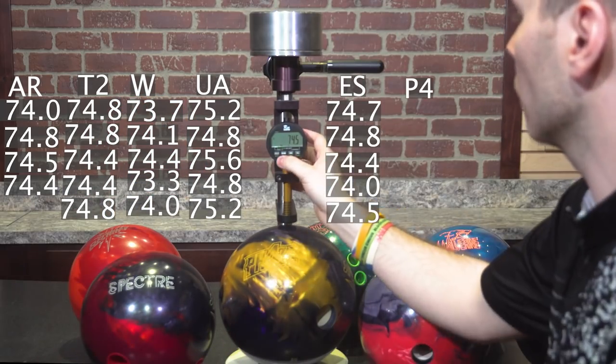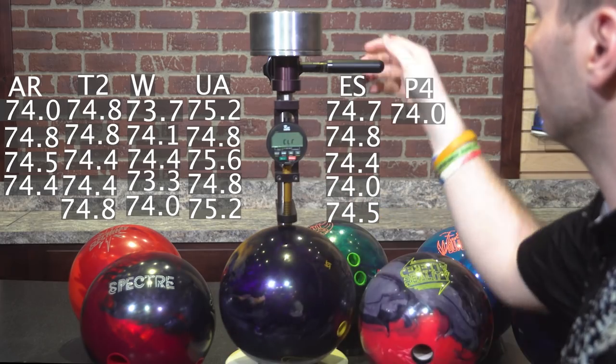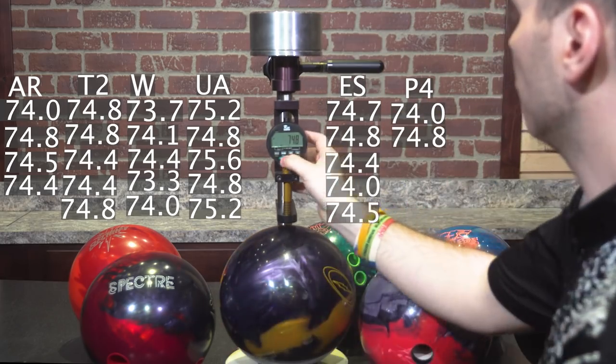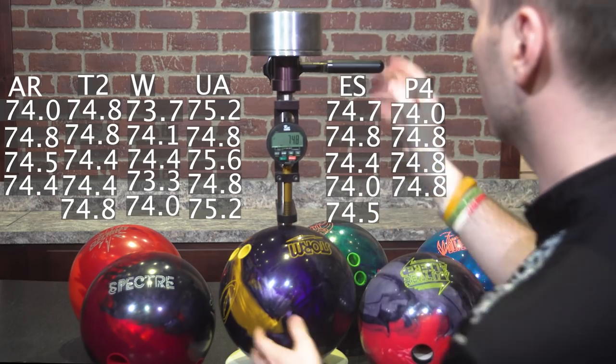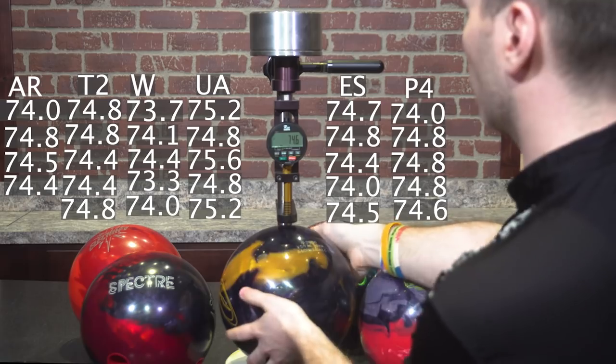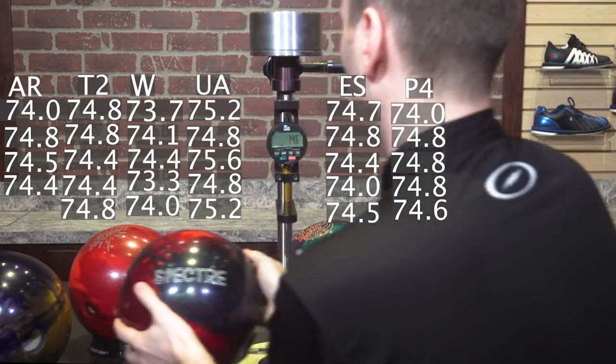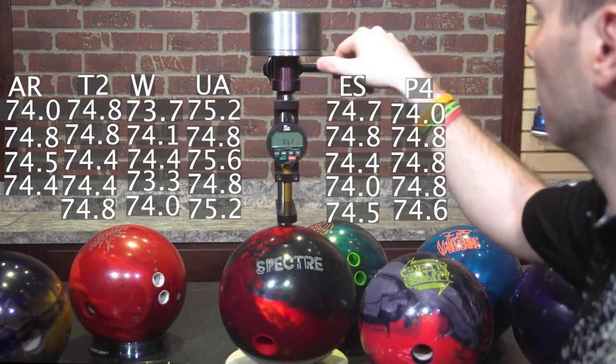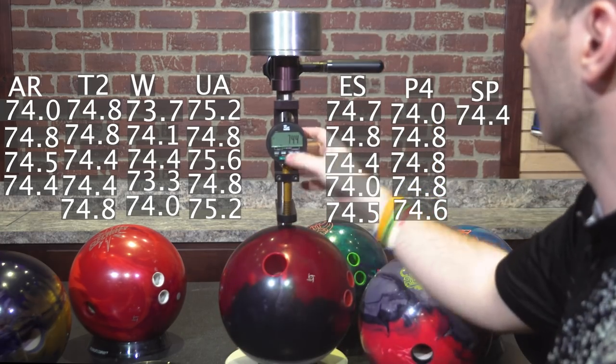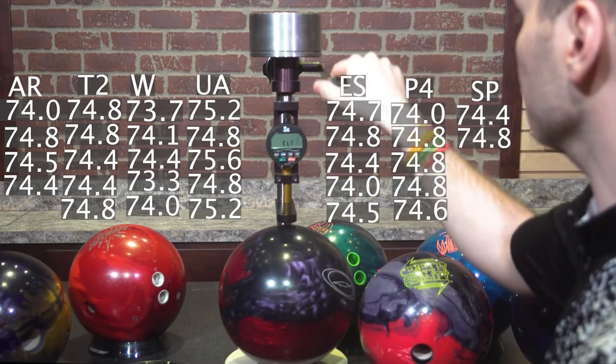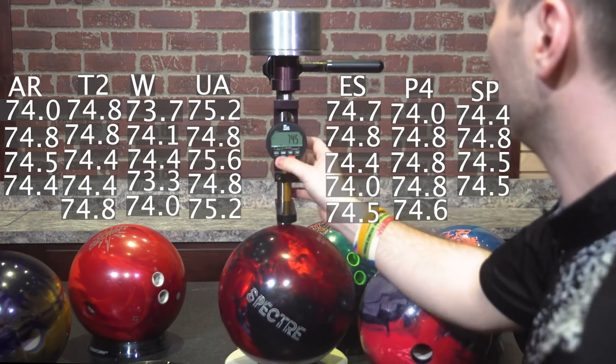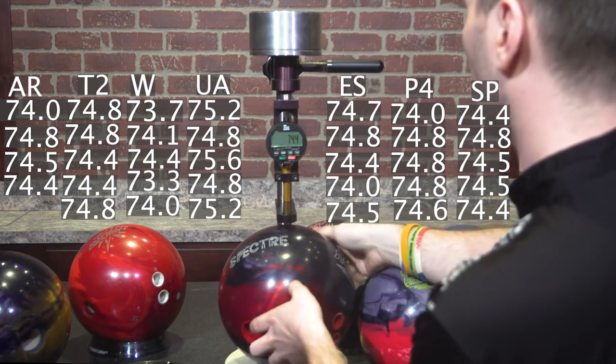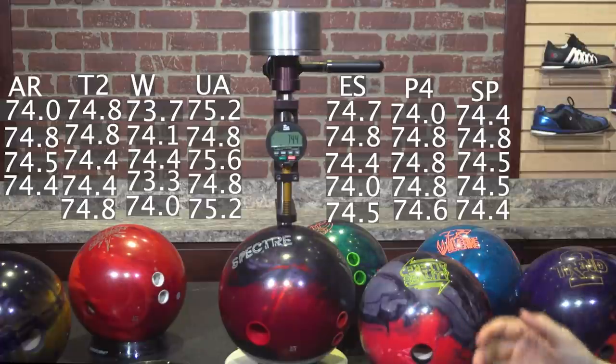Phase 4: 74.0, 74.8, 74.8, 74.8, 74.6, and finally a Spectre: 74.4, 74.8, 74.5, 74.5, 74.4. So you can see with all of these customer exchange balls, not one of them was under 73D.